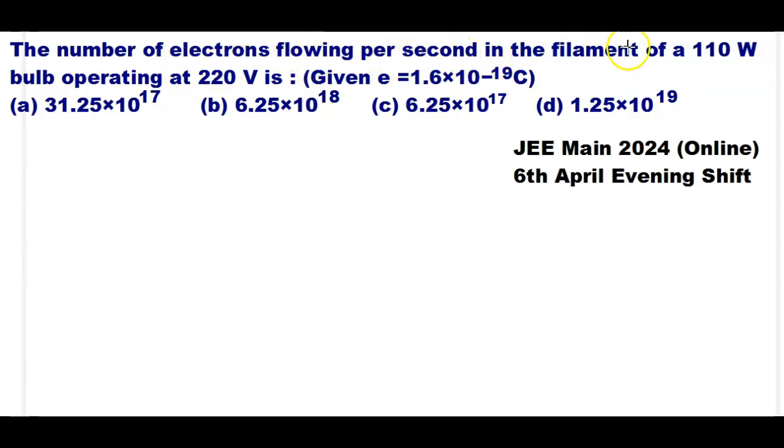The number of electrons flowing per second in the filament of a 110 watt bulb operating at 220 volts is, given that e is equal to 1.6 into 10 to the power minus 19 coulombs.